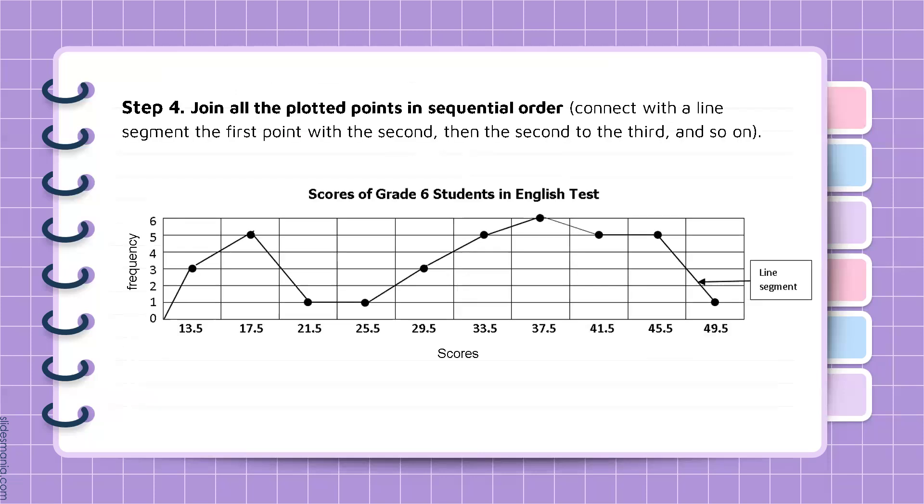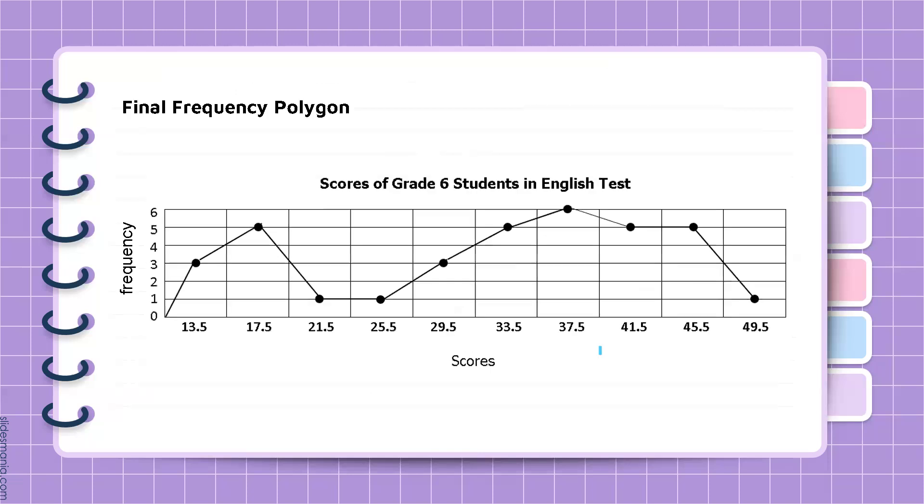Step 4, join all the plotted points in sequential order. Connect with the line segment the first point with the second, then the second to the third, and so on. And here we have our final frequency polygon of the scores of grade 6 students in English test.